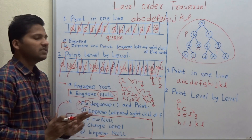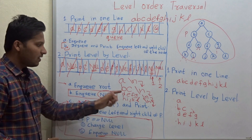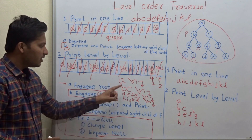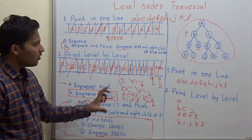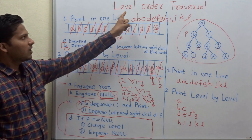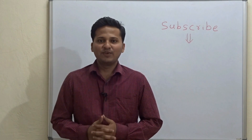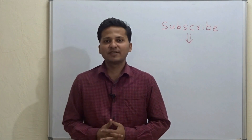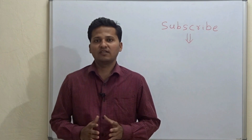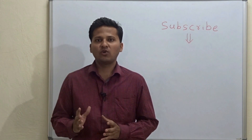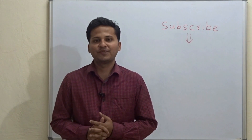We have printed all the levels line by line, or level by level. This is how you write a program for level order traversal. Please subscribe to my channel as I post algorithm videos every day. If you want a video on any particular topic, please mention it in the comments below. Thank you.